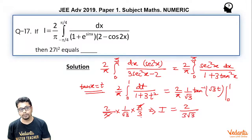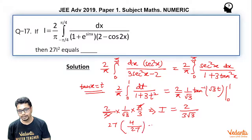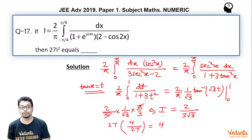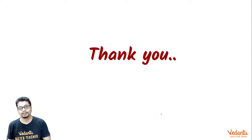Therefore, 27I² = 27 × (2/(3√3))² = 27 × 4/27 = 4. That is our answer. A simple question solved using the property of definite integration. Thanks for listening.